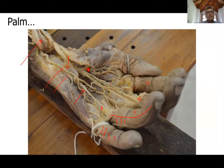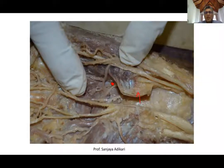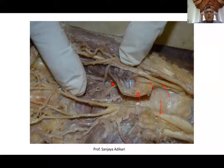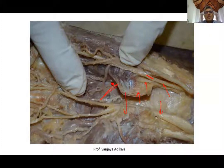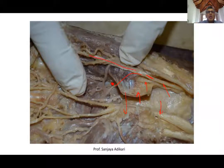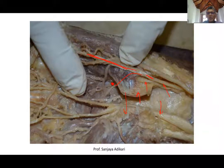In the same specimen, you can see the ulnar nerve giving rise to a deep branch and a superficial branch. The ulnar artery is lateral, and the deep branch of the ulnar nerve winds around the hook of the hamate to enter the deep layer, supplying the intrinsic muscles. The superficial branch continues to give digital branches supplying the medial one and a half fingers.